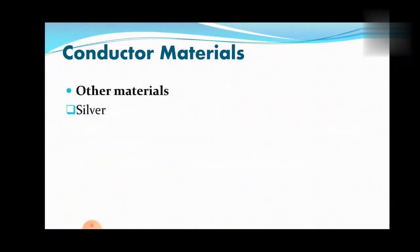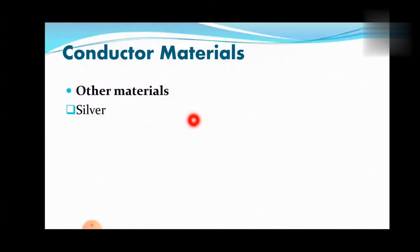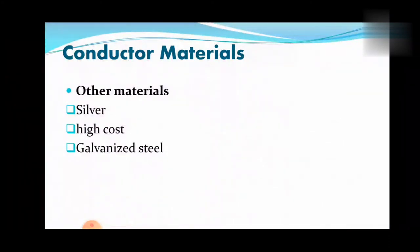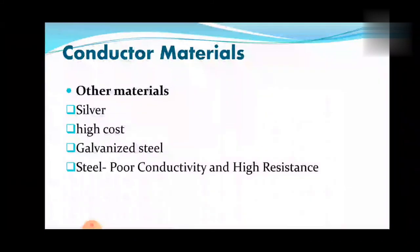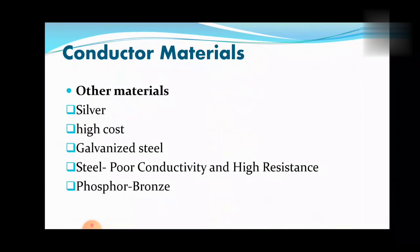Other materials used as conductors include many alloys that conduct electricity. Silver is more conductive than copper, but due to its high cost, it is not practical in most cases. Galvanized steel may also be used as a conductor, although steel conductors are not suited for transmitting power efficiently due to poor conductivity and high resistance. High strength alloys such as phosphor bronze may also be used sometimes under extreme conditions.